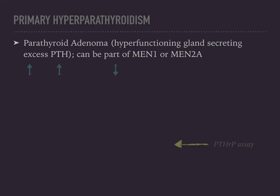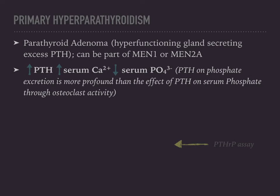The laboratory profile of primary hyperparathyroidism is elevated PTH, elevated serum calcium, and decreased serum phosphate. The decreased serum phosphate is not intuitive — the PTH effect on phosphate excretion is more profound than the effect of PTH on serum phosphate through osteoclast activity, so overall you have a decrease in serum phosphate when there is too much PTH.